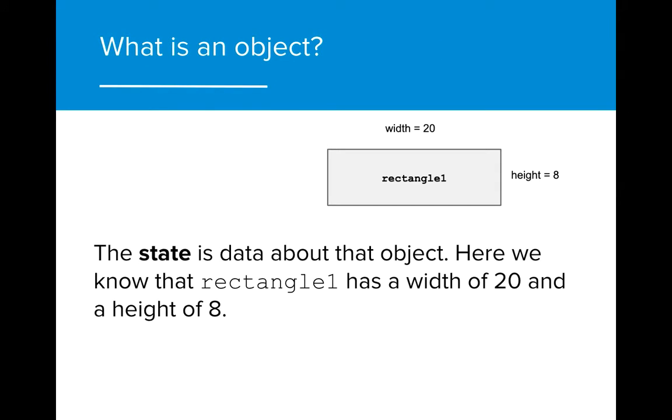Since this rectangle is an object, it must have a state and a behavior. The state of an object is the data that is associated with the object. In this case, the data associated with the rectangle object is that it has a width of 20 and a height of 8.